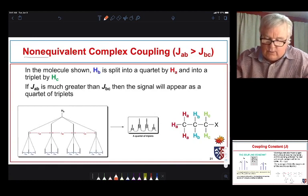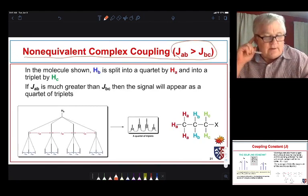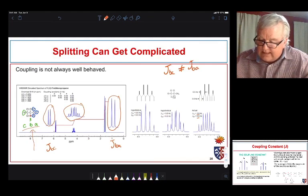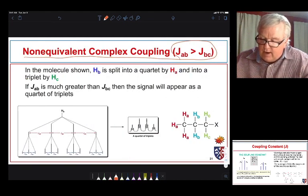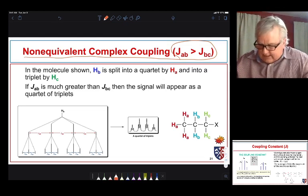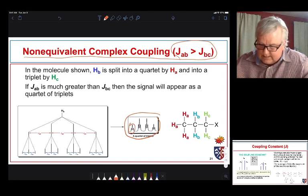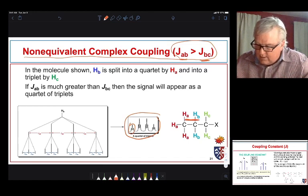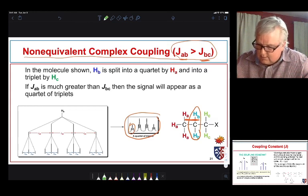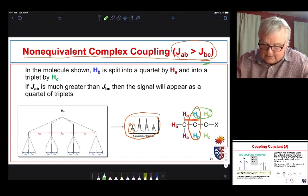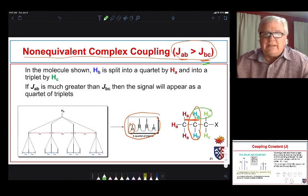We can also have instances where we get some nice-looking patterns, but our coupling constants are very different. Now, this one was complex because, although they weren't equal, they were close. If they're very far apart, we get some nice patterns as well. So, in this particular instance, what we're seeing, look at this, we're seeing a quartet of triplets. And that's because JAB is much larger than JBC. So, JAB is responsible for this signal being split into a quartet, and JBC is responsible for this signal being split into a triplet. So, we see a nice quartet of triplets because the larger coupling constant spreads them out and the smaller coupling constant spreads each of those individual ones.